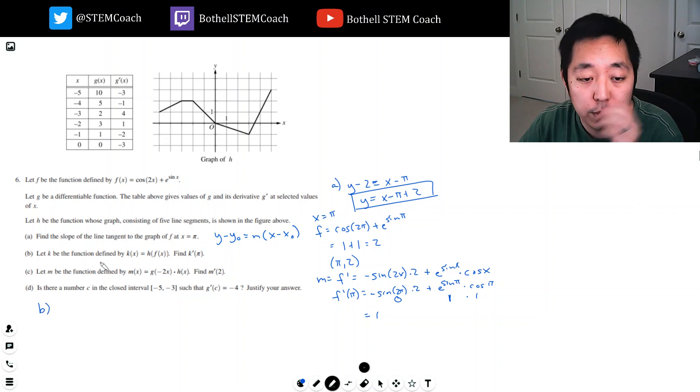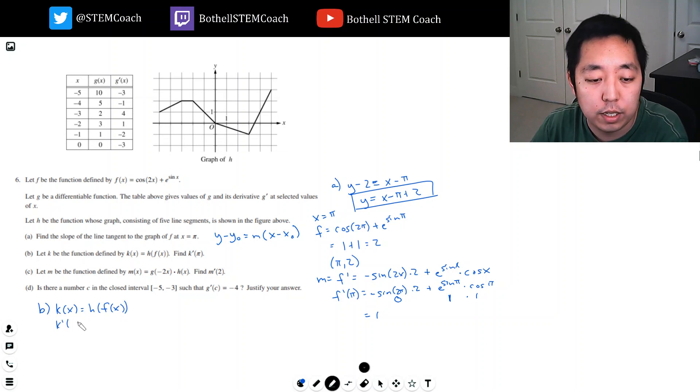Part B: Let k be the function defined by h of f(x), find k prime of x. So k(x) equals h of f(x). K prime of x would be h prime of f(x) times f prime of x. This is chain rule. I take the derivative evaluated at that f(x) and then multiply by the derivative of the inside. So k prime of π is h prime of f(π) times f prime of π. We already computed some of these. f of π is 2, so this is equal to h prime of 2, and the derivative at π was 1, so it's just h prime of 2.